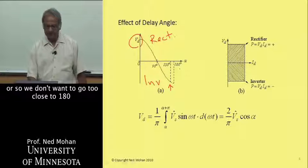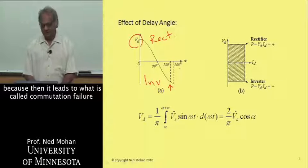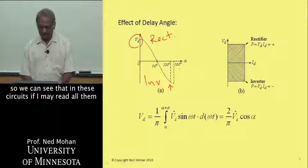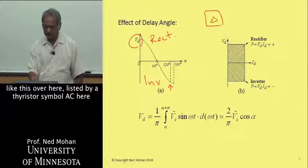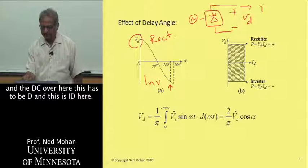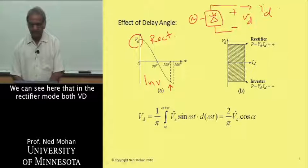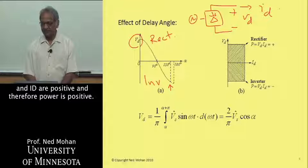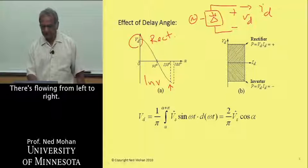We don't want to go too close to 180 degrees because that leads to what is called commutation failure. We can redraw these circuits with a thyristor symbol, AC on one side and DC on the other side, where this is V-sub-D and this is I-sub-D. In the rectifier mode, both V-sub-D and I-sub-D are positive, and therefore power is positive — it's flowing from left to right.